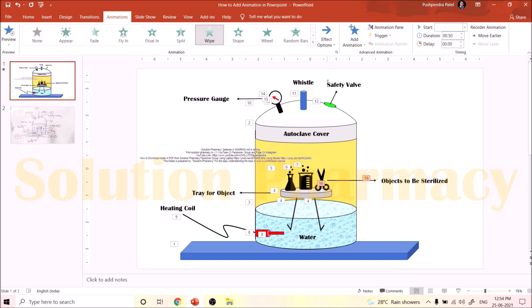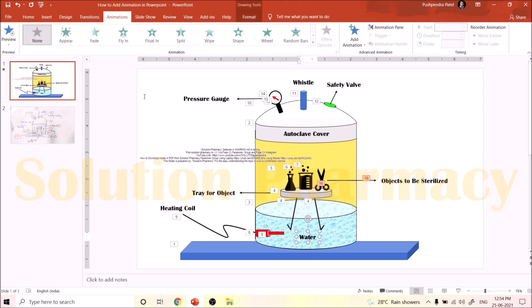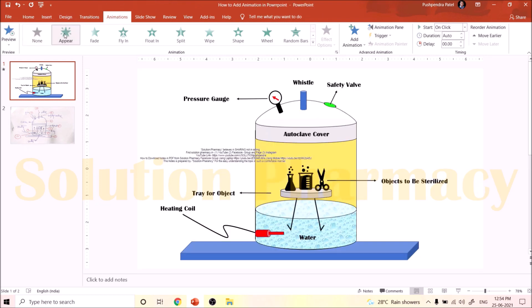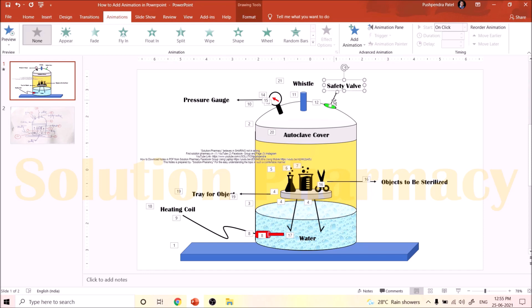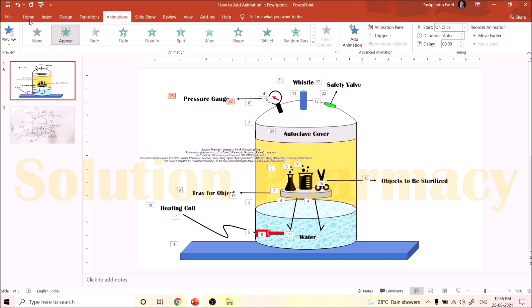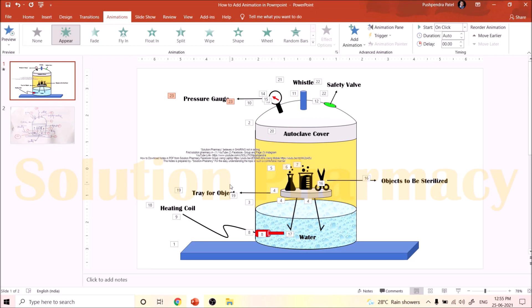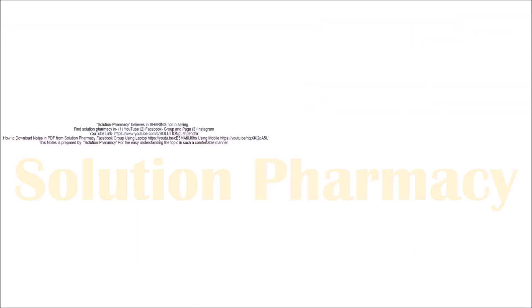Select the Effect option From Left to Right — now the label appears from left to right. I am using different animation options for different labels: select the water label and click Appear; next the heating coil label; then the tray for objects — select both the arrow and text box and choose Appear; then the autoclave cover — choose Appear; then the safety wall label — click Appear; and then the pressure gauge — click Appear. You can see the sequence numbers appearing on the objects as animation is added.